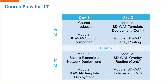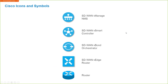From the perspective of icons you'll see in this class: the vManage NMS has the icon with the small bar lines, the vSmart controller, the vBond orchestrator, the vEdge router, and a standard router. We'll see these icons throughout the course, and we'll be talking about what these individual pieces are and how they come together to create the overall SD-WAN architecture.